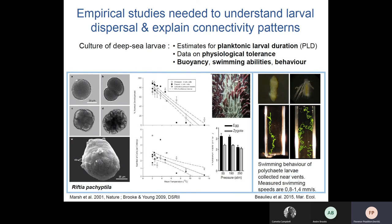Empirical data can also be obtained from the culture of deep-sea larvae, though this has rarely been done given the difficulties in reproducing deep-sea conditions in the laboratory. One example is the culture of embryos of the tube worm Riftia pachyptila using pressure vessels, which allowed observation of early embryonic development, estimation of optimal growth conditions and developmental rates, and buoyancy of the embryos — all providing important information for modeling approaches.